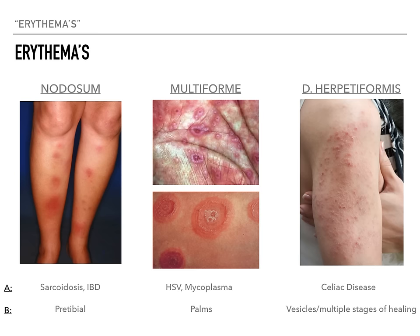The associations of all three erythemas are really high yield. For erythema nodosum, it's associated with sarcoidosis and inflammatory bowel disease — Crohn's and ulcerative colitis. The buzzword, or the location, is going to be pre-tibial. So the patient will have sarcoidosis or one of the inflammatory bowel diseases and will develop red, diffusely painful erythematous lesions in the pre-tibial area of their legs. If you see that, the answer is erythema nodosum.